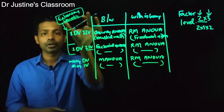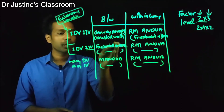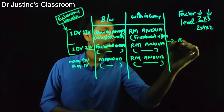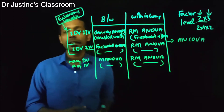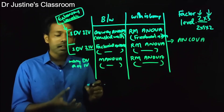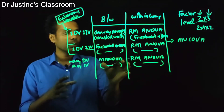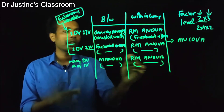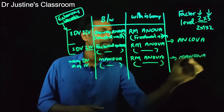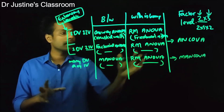If you have an extraneous variable to control while performing any of the ANOVAs — whether one-way, factorial, or others — it is called ANCOVA (Analysis of Covariance). You measure the extraneous variable and control it statistically while conducting the ANOVA. If you need to control an extraneous variable when you also have multiple dependent variables, that is called MANCOVA. So ANOVA becomes ANCOVA, and MANOVA becomes MANCOVA when an extraneous variable is involved.